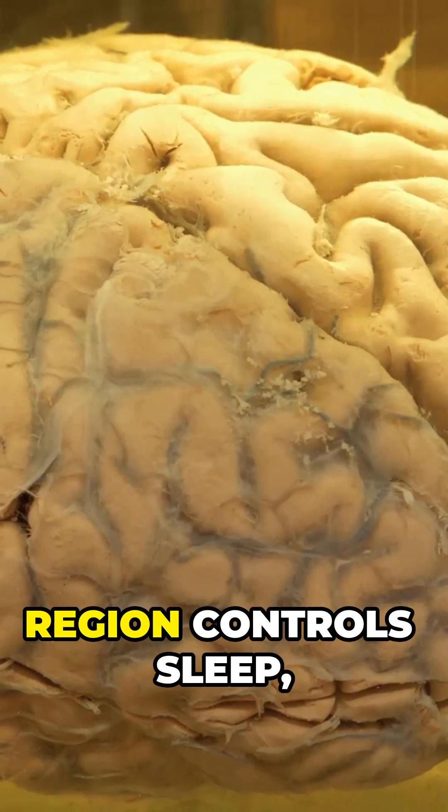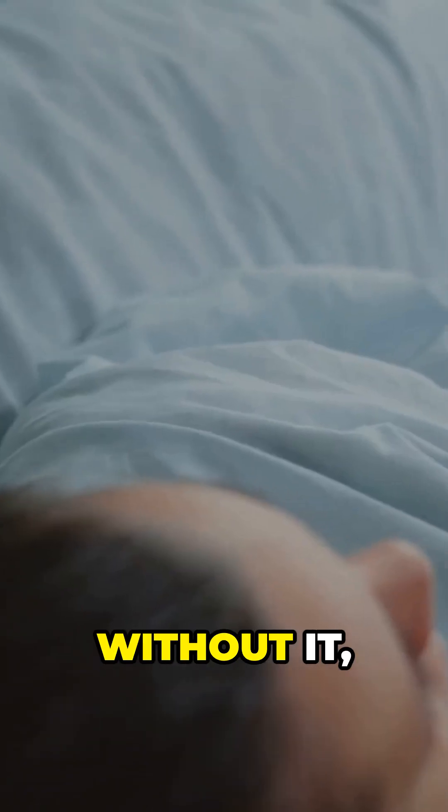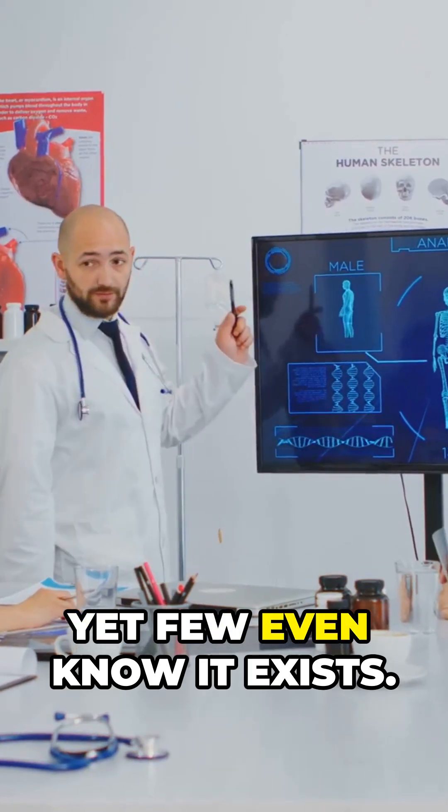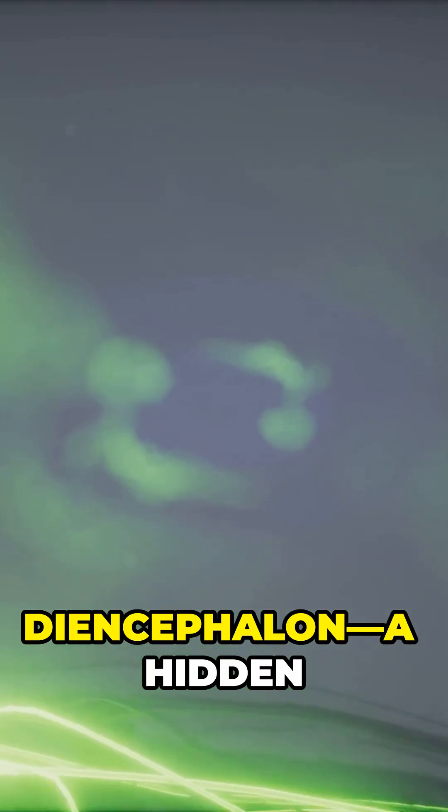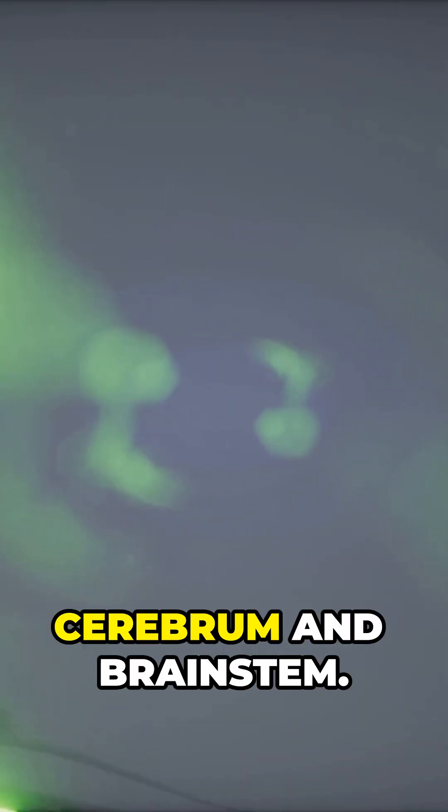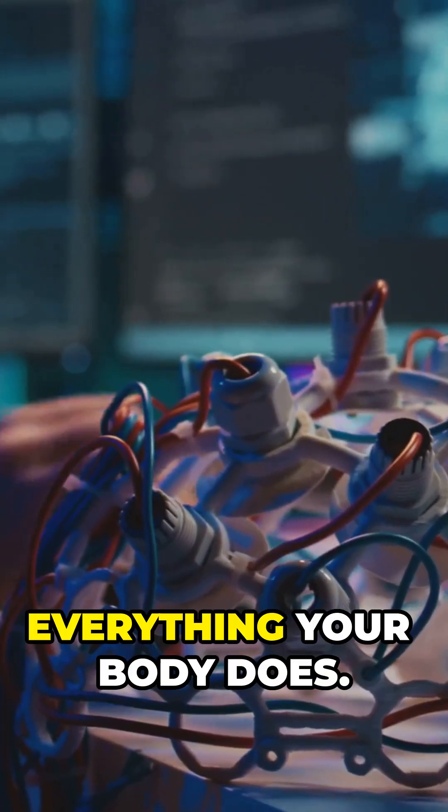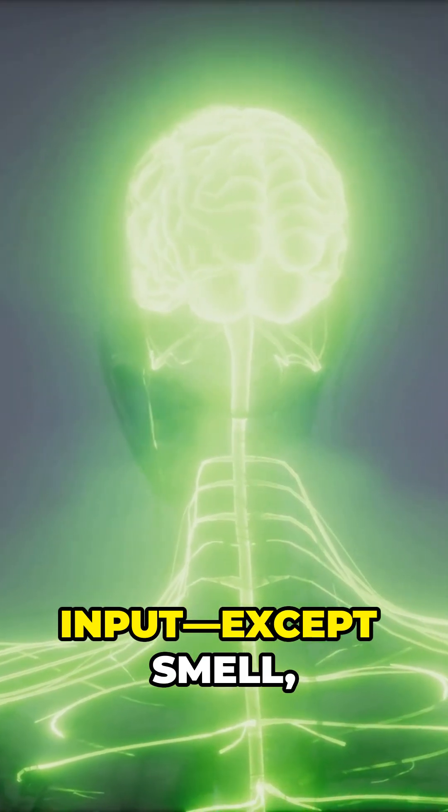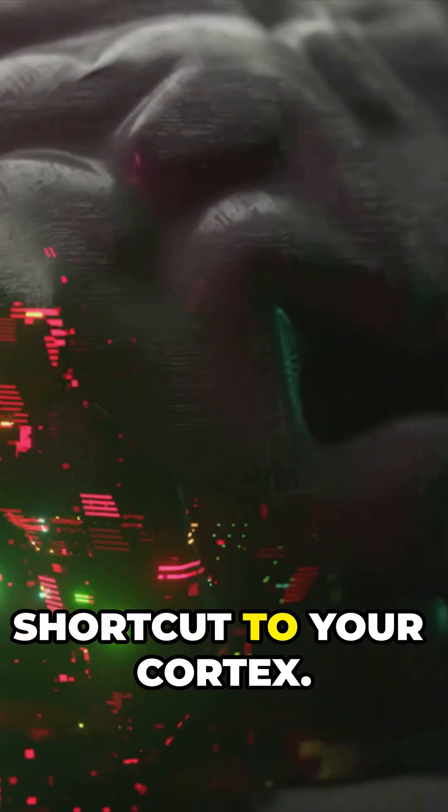This tiny brain region controls sleep, hunger, and emotion. Without it, your body would break down, yet few even know it exists. It's called the diencephalon—a hidden hub between your cerebrum and brainstem that links your thoughts to everything your body does. The thalamus filters all sensory input except smell, which takes a shortcut to your cortex.